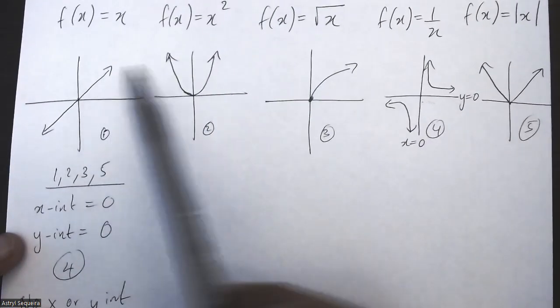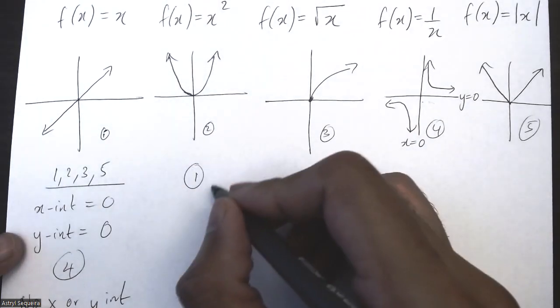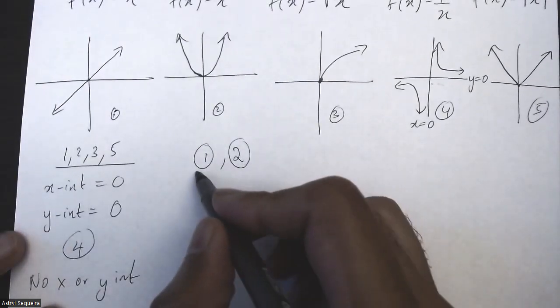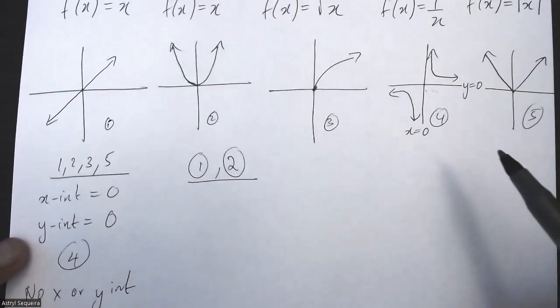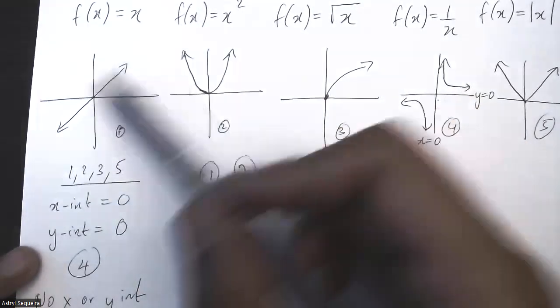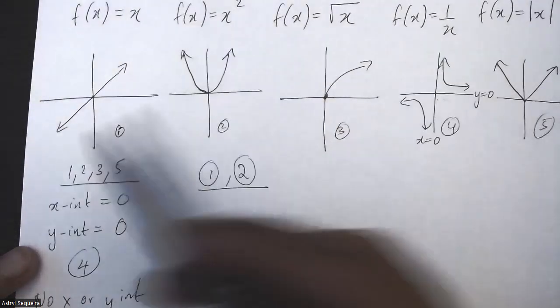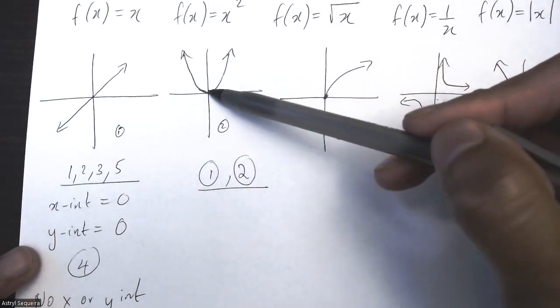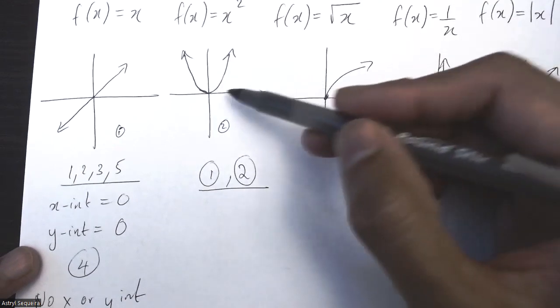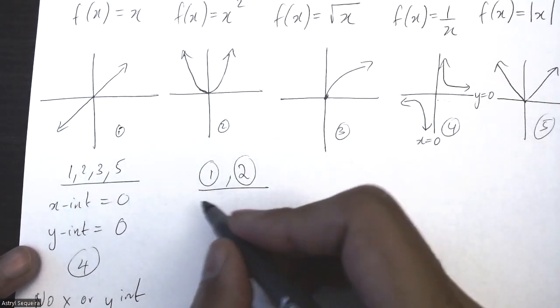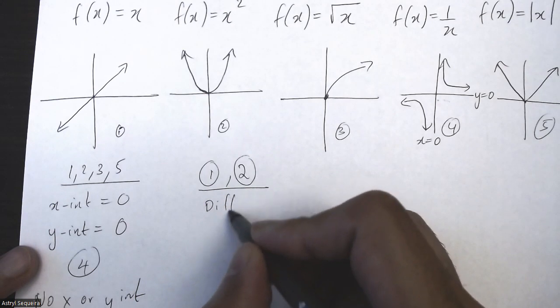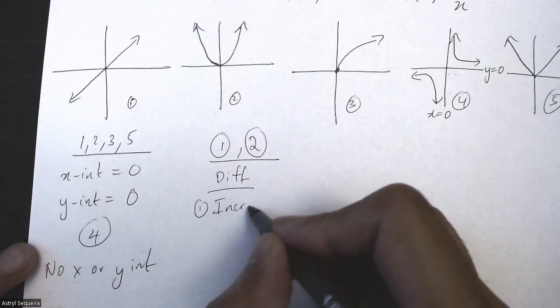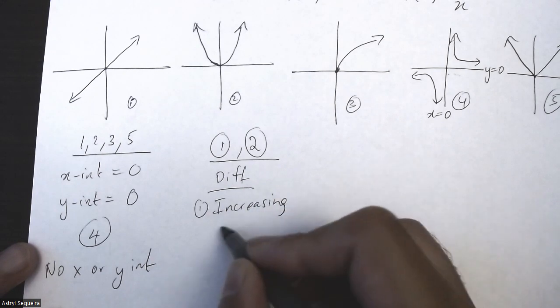Let's say we're comparing these two, one and two. We already know the similarity between one and two—the x and y-intercept can be used. But what's the difference between one and two? Well, one is increasing everywhere. Whereas two is decreasing for the first half from negative infinity till zero, but it's increasing from zero till infinity.